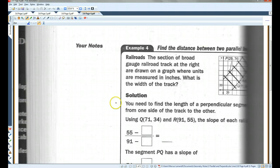Railroads. The section of broad gauge railroad track at the right are drawn on a graph where units are measured in inches. And it got cut off again. What is the width of the track? I'm going to try to draw what's missing here. This says Q(71,34). And this is P(9,155). So, you need to find the length of a perpendicular segment from one side of the track to the other.